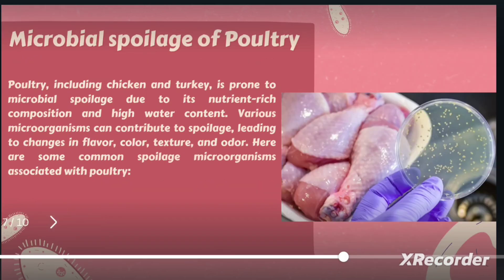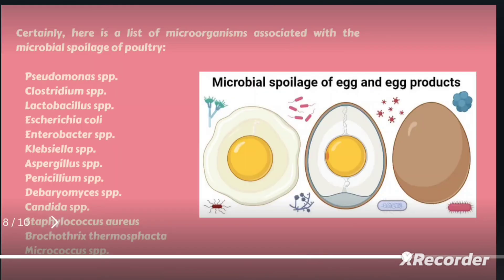Those were some of the common characteristics of meat spoilage due to the action of microorganisms. Now let us move on to the microbial spoilage of poultry products. Poultry products, similar to meat, are rich in nutritive composition and have high water content, which allows various bacteria and fungi to grow on the surface and inside, leading to microbial spoilage. Here is the list of pathogenic microorganisms associated with spoilage of poultry meat and its products such as eggs.